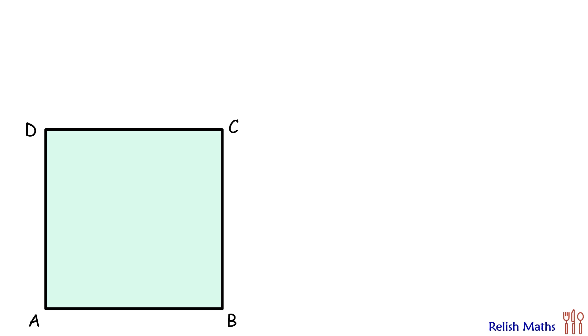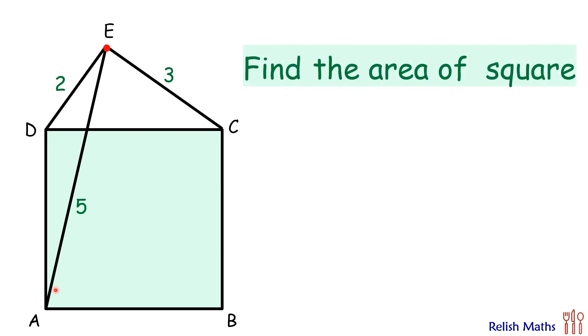In this question, given to us is a square with a point outside the square. The distance of this point from three vertices is given: from vertex D it is 2 centimeters, from vertex C it is 3 centimeters, and from vertex A it is 5 centimeters. Using this data, we have to find what is the area of the square.